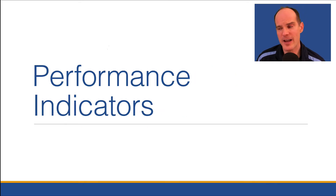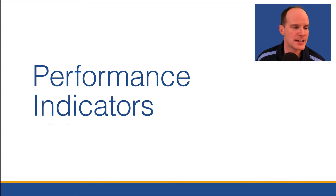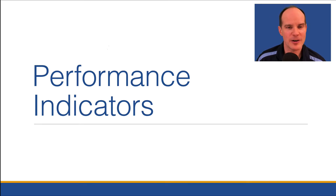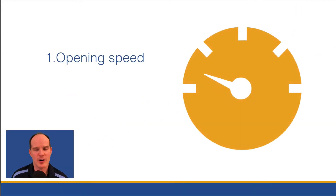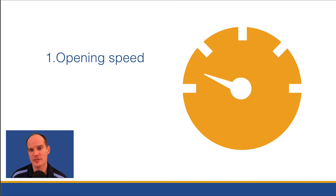All right. Now, before we can talk about the factors that affect performance, let's talk about performance indicators. A customer or a user might say, my database is slow. Let's define that a little better. I've broken that definition into three different parts. The first part is opening speed, because that's a very measurable thing. Opening speed is after you enter the credentials to get into a FileMaker app, you click OK, you wait, and you measure the time from when you push OK to when the system is ready for use. That's opening speed, and that's easily measurable.